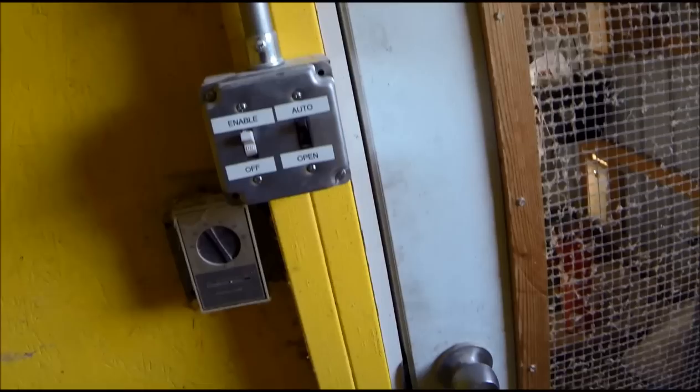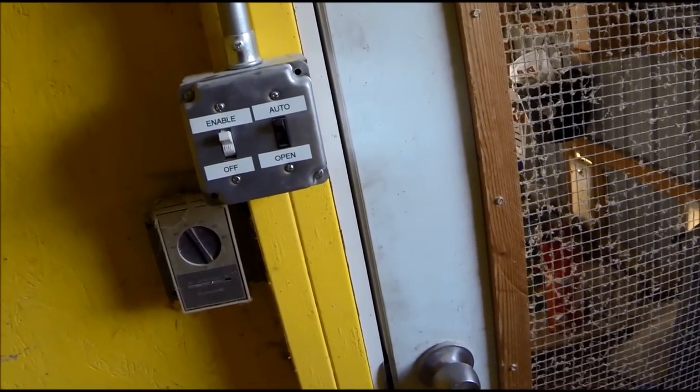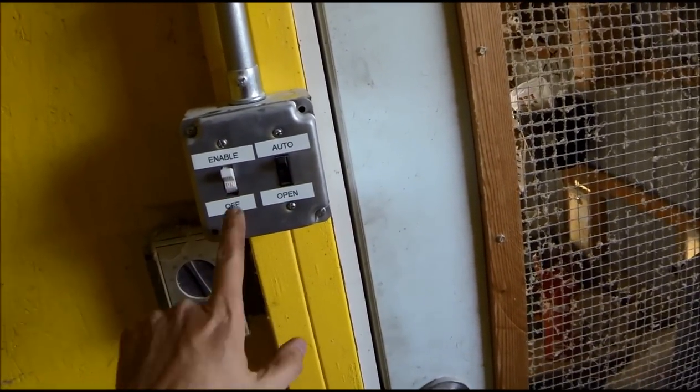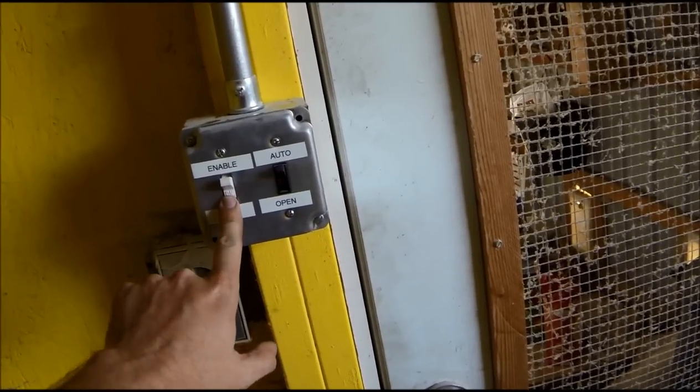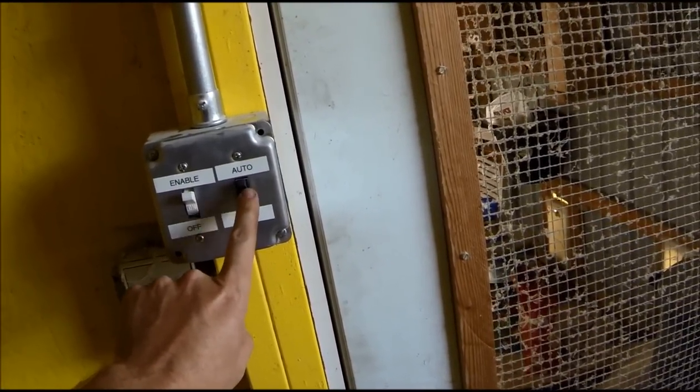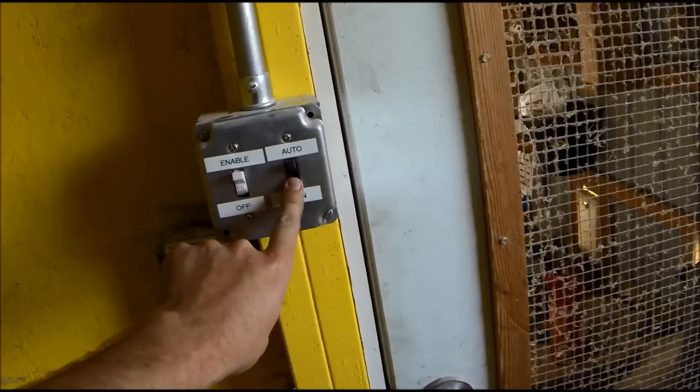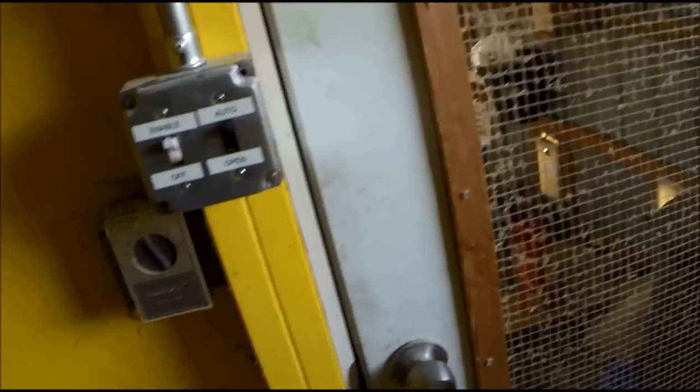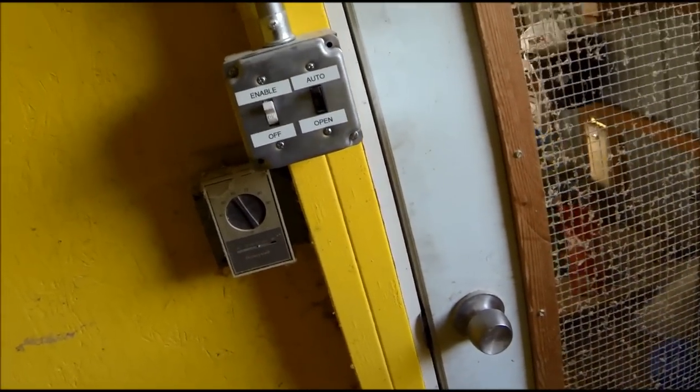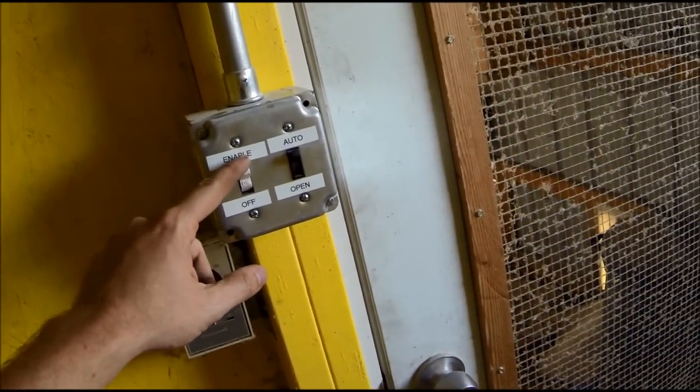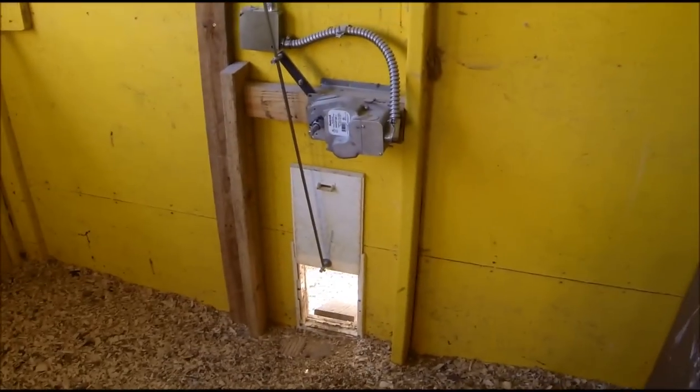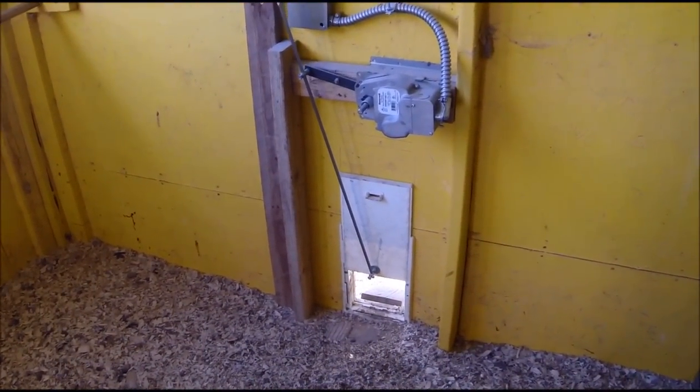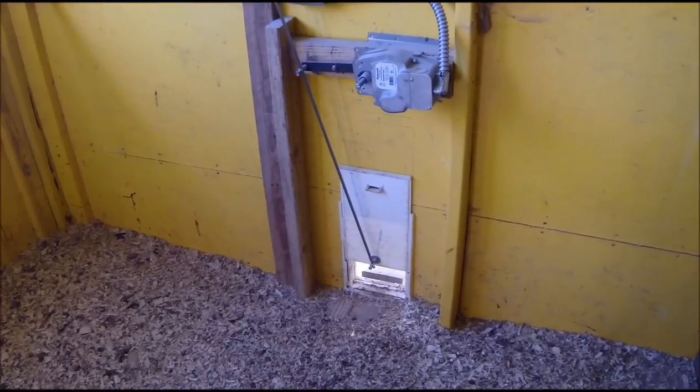Here's my control switches. Right now it's enabled and auto. This is a single pole switch that just kills power to it. This is a three-way switch that has an automatic and a manual. I'll draw that out later on. If I turn this to off, it just kills power to everything. And that is the spring that's taking that door back down.